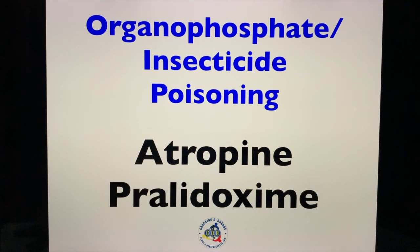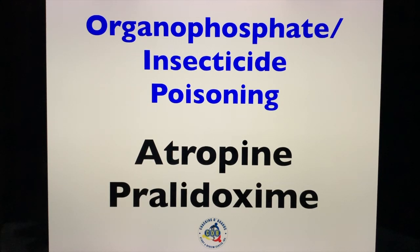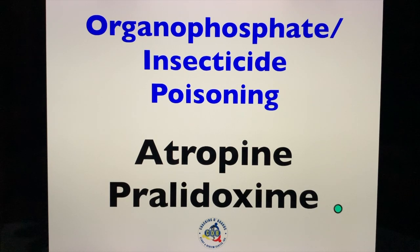Next, we deal with organophosphate poisoning or insecticide poisoning — for example, malathion or parathion, or a case vignette of a farmer exposed to pesticides. Treatment of choice is atropine, and your backup drug is pralidoxime. Organophosphate poisoning is treated with atropine first-line, and pralidoxime as the backup antidote.